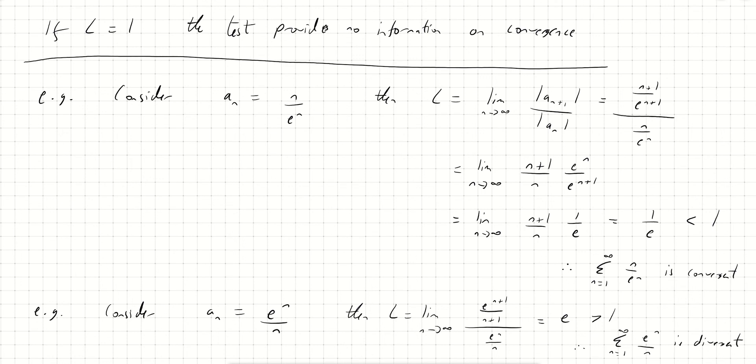So we've done two examples: one with a convergent series and one with a divergent series. It should be pretty obvious that these series are convergent and divergent just by looking at the terms, but using the ratio test gives a good proof.